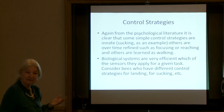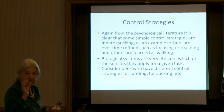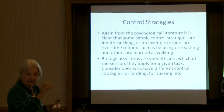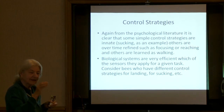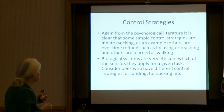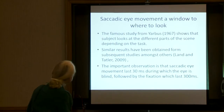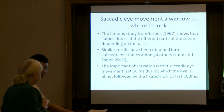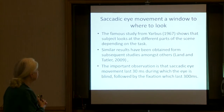Some control strategies are innate — for example, sucking: the first thing a baby does. Others are refined over time, such as focusing — we are born with focusing capability but it improves over time. Reaching: if you watch newborn babies, they do rough reaching motions but eventually learn how to grasp. Others are learned, such as walking. Biological systems are very efficient in which sensors they apply for given tasks — consider bees, who have different control strategies for landing and sucking. The famous Yarbus 1967 shows that a subject looks at different parts of a scene depending on the task.